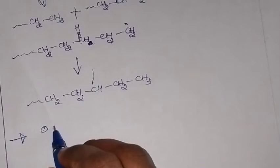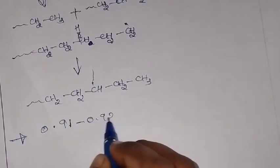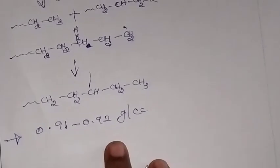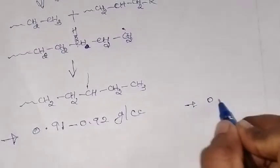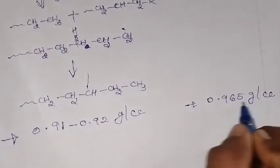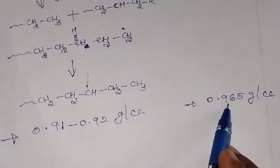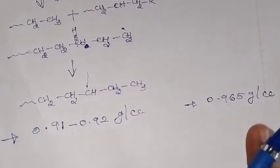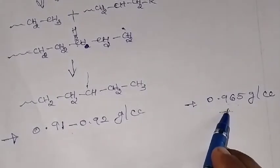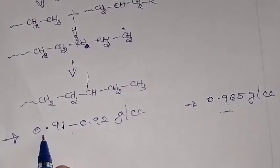The density of LDPE is 0.91 to 0.92 gram per cc, while for HDPE the density is 0.965 gram per cc. HDPE is more dense than LDPE — that is why it is called high density polyethylene.